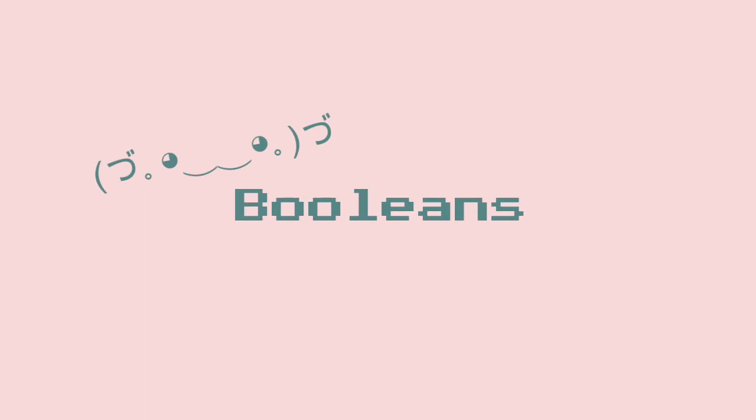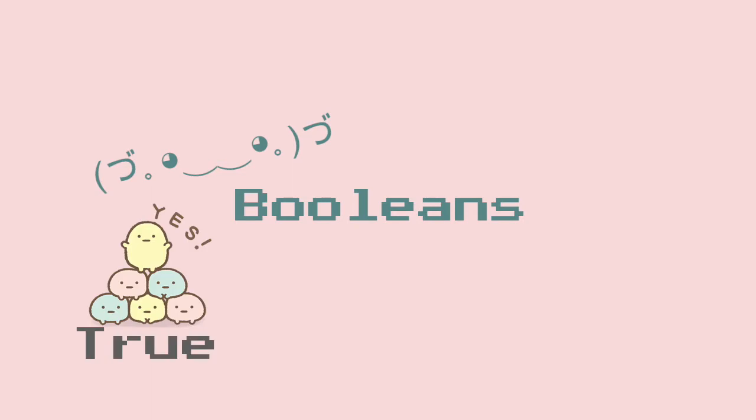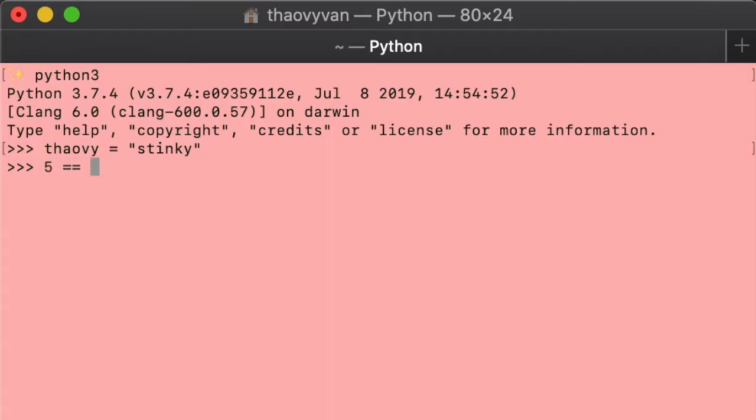Finally, booleans are the two values true and false. We use booleans to test if a specific predicate is true or false.